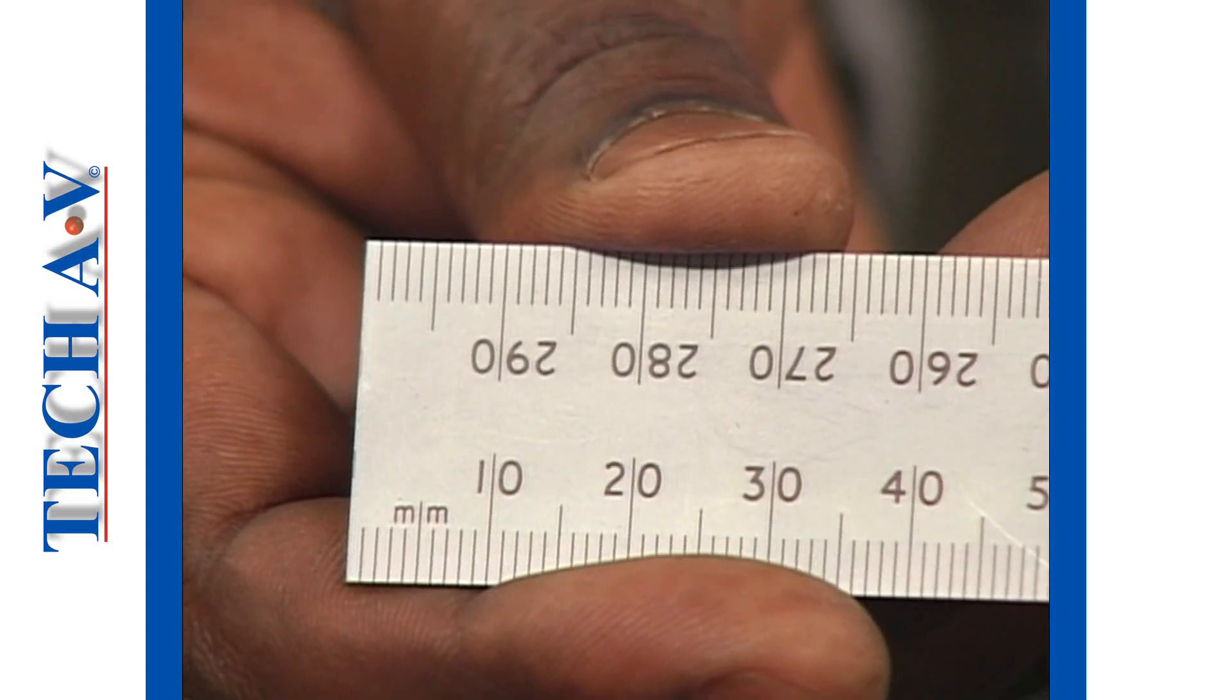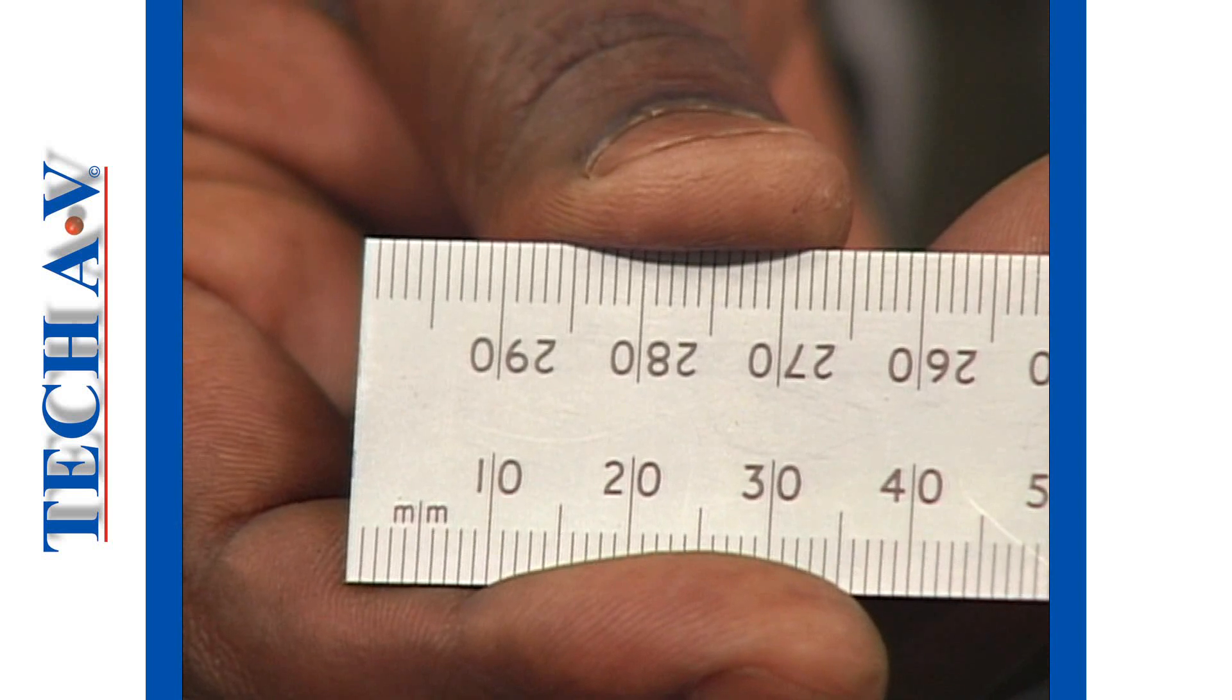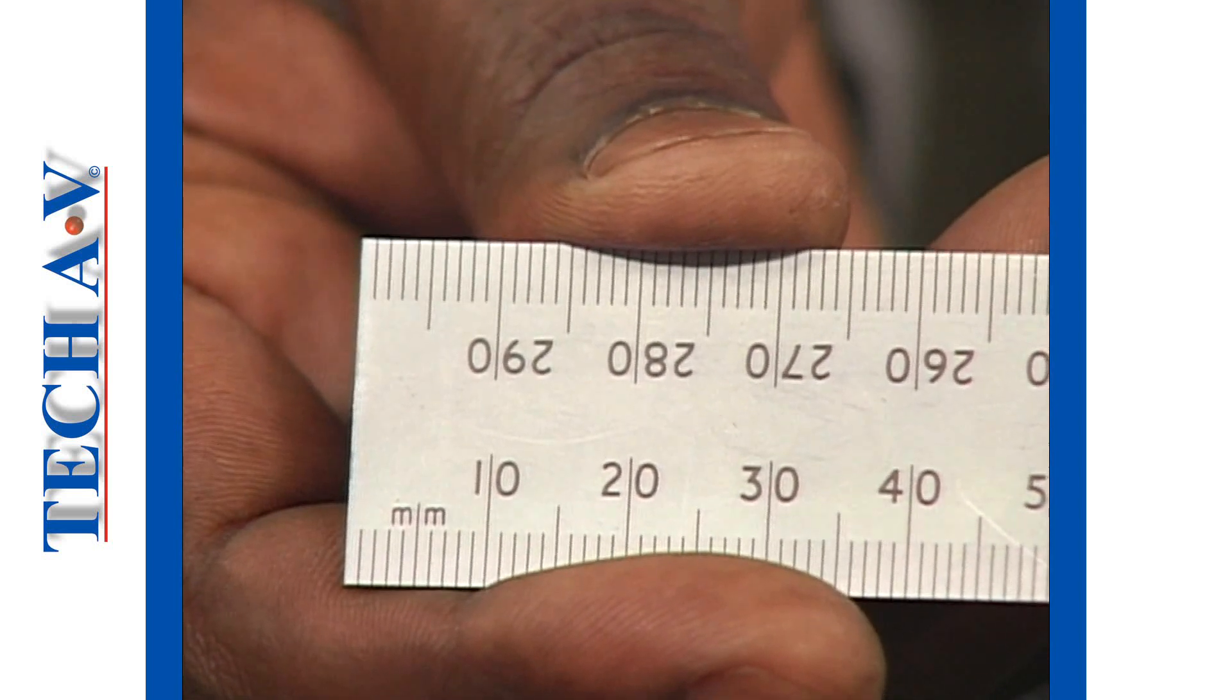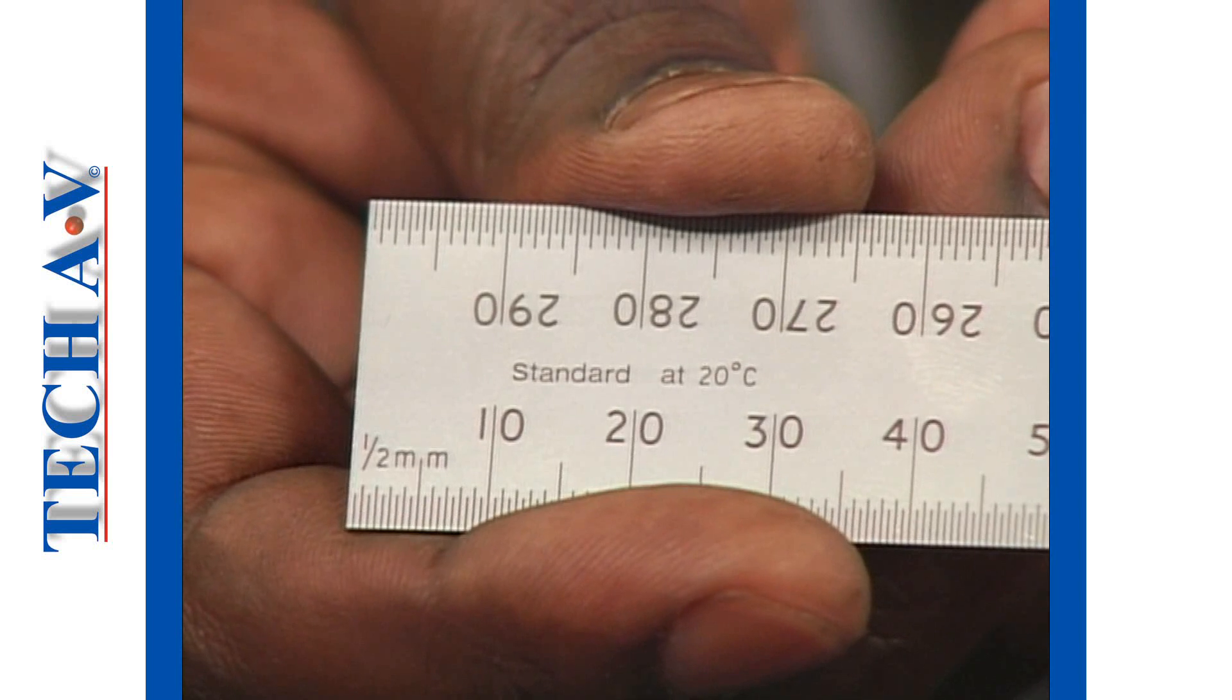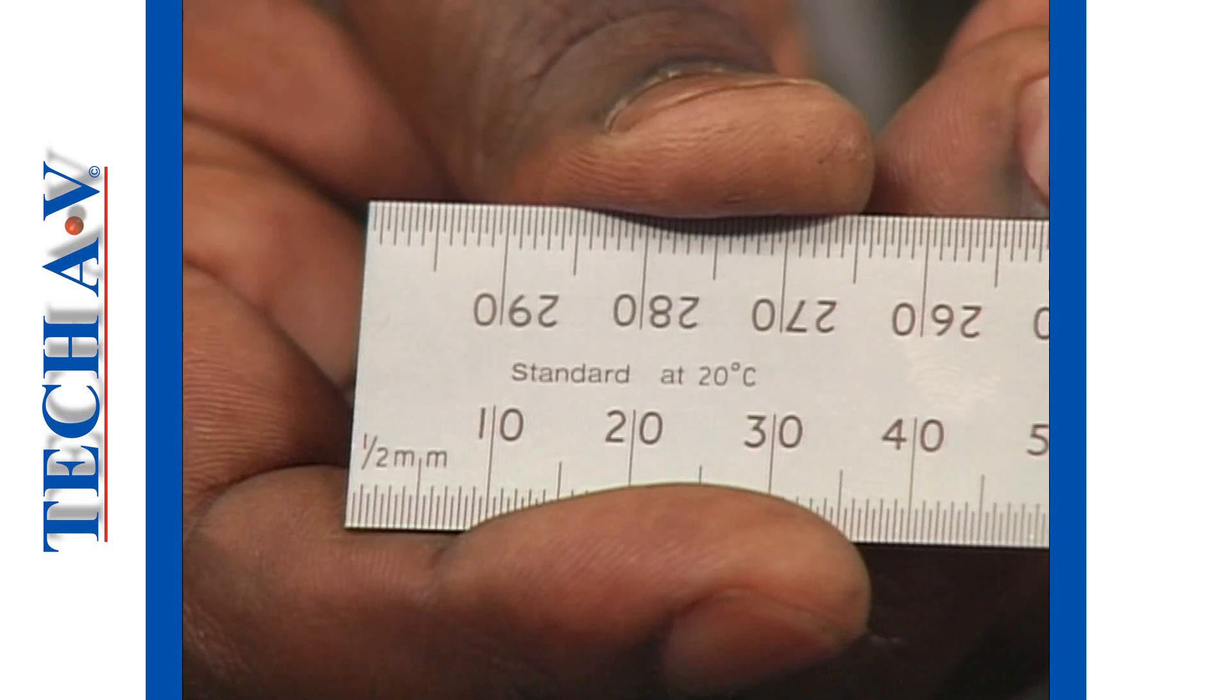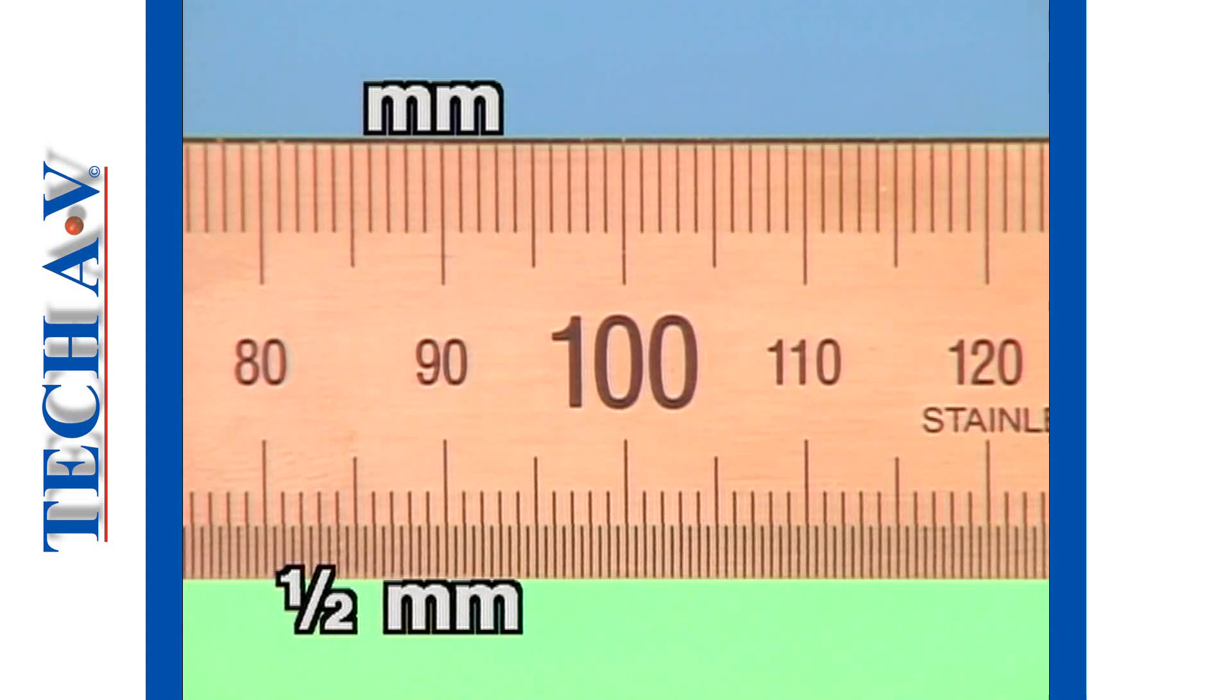Reading an engineer's rule is basically the same as reading the wooden rule and the numbers are given in millimeters. If we turn this rule over you will see that the markings are also shown as half millimeters which is the reason that an engineer's rule is more accurate than other types. Some makes of engineers rules show millimeters and half millimeters on the same face such as this type.